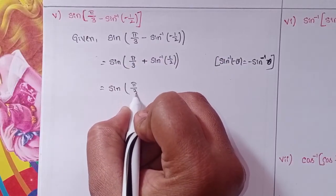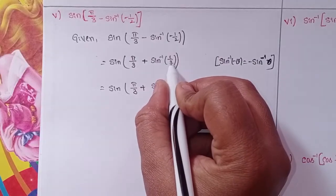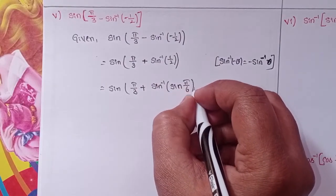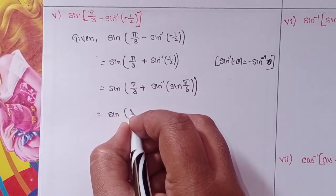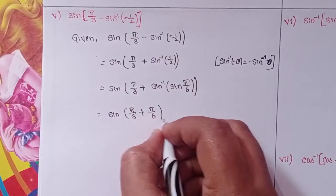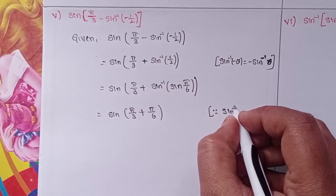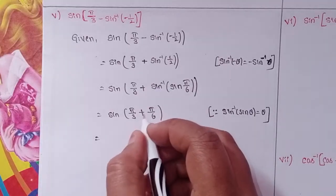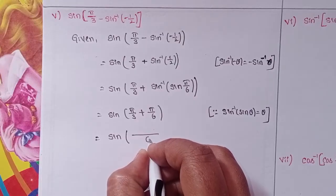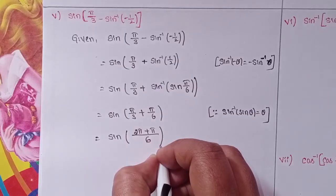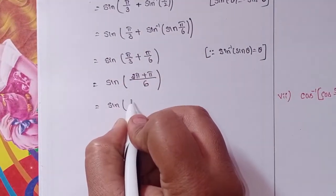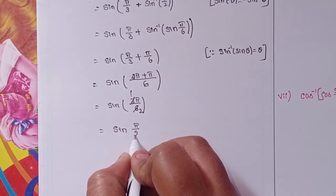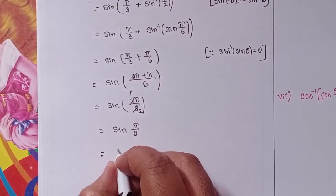sin(π/3) plus sin inverse of 1 by 2 — in terms of sin, I will write sin(π/6). Sin inverse sin cancel means sin of π/3 plus π/6, because sin inverse of sin theta equals theta. Simplifying: LCM is 6, so 2π plus 1π gives sin of 3π/6. Next, 3 ones and 3 twos gives sine of π/2. Sine of π/2, that means 90 degrees. Sine 90 value is 1.